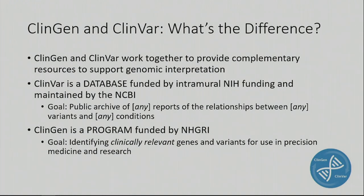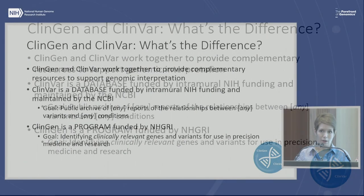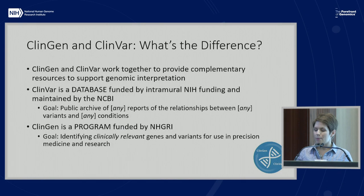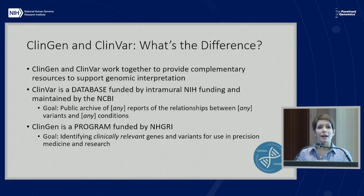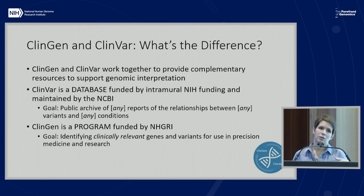I added 'any' in brackets to the ClinVar goal to help you see this subtle distinction. ClinVar is really an archive and can and should accept information about any kind of variants from anywhere. What ClinGen does, with its focus on clinical relevance, is put a layer of curation on top of information that might be available through ClinVar.